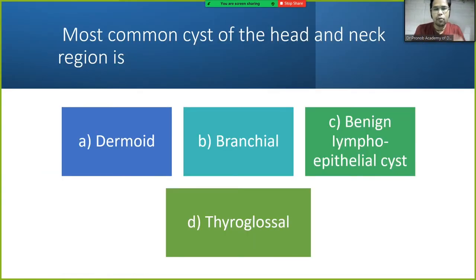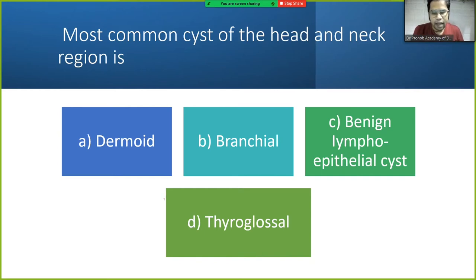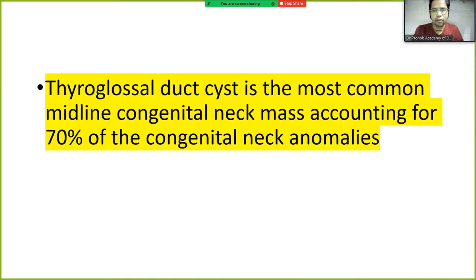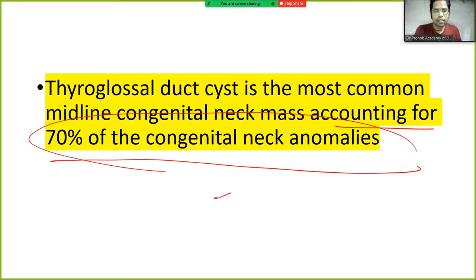The most common cyst of the head and neck region is the thyroglossal duct cyst. The thyroglossal duct cyst is the most common midline congenital neck mass, accounting for 70% of congenital neck anomalies.